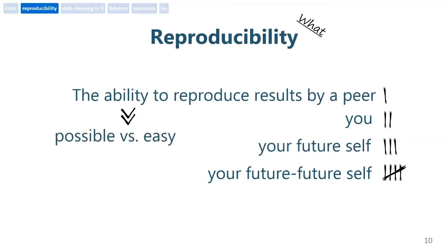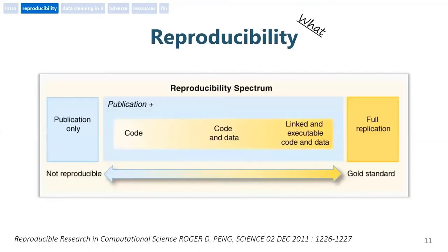Ability is kind of a spectrum, and this is exactly what Roger Peng is saying in his paper from 2011. Having just the publication, or just the code and the data, is not enough. You have to have proper linkage to achieve reproducibility.